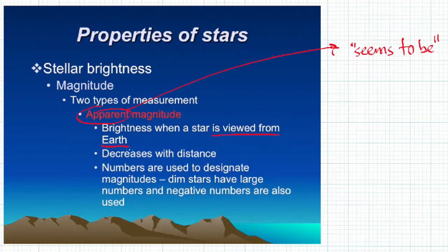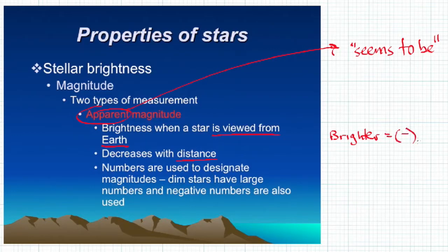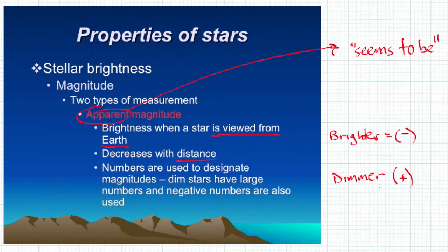As stars gain distance from us — the further away a star is — the less bright it appears, or the less magnitude it appears to be. Now, magnitude is kind of tricky: brighter stars can have negative magnitudes, and dimmer stars have positive magnitudes. Don't let that confuse you too much — it just depends on the scale we use. Our sun has a magnitude of positive five, which gives you an idea of the scale. Our sun is kind of average.